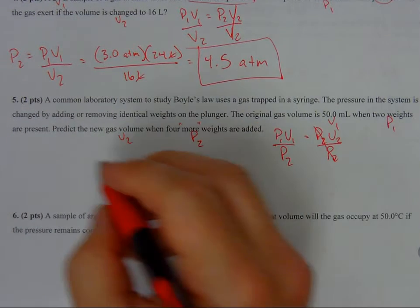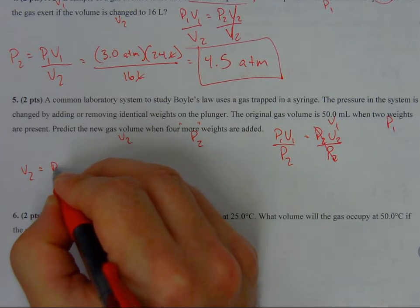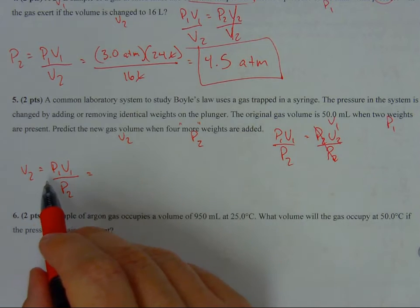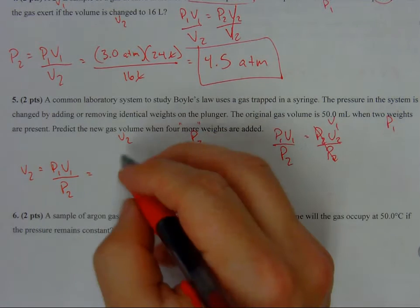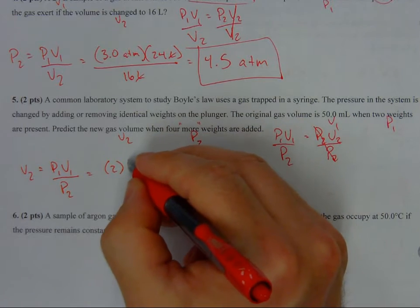So we'll be left with V2 equals P1 times V1 over P2. Well, what's the value for P1? Two. It's two weights. We don't know what it is, but it's two - two whatevers.